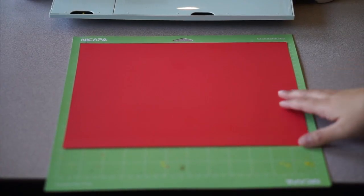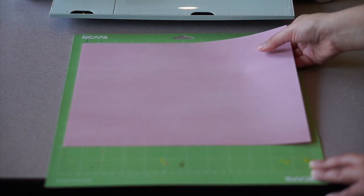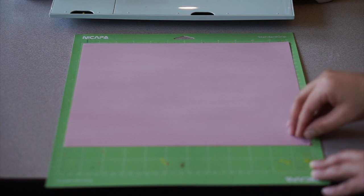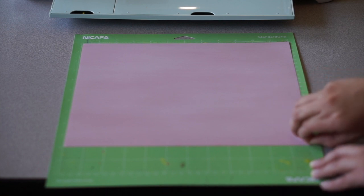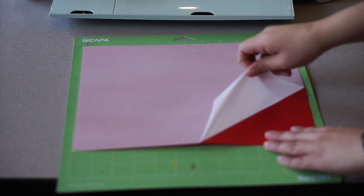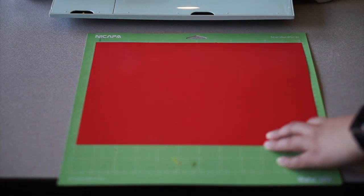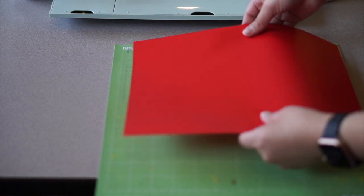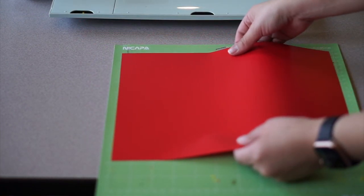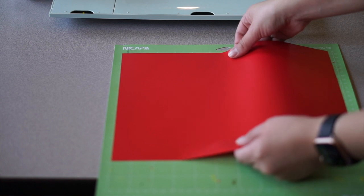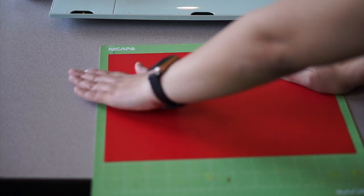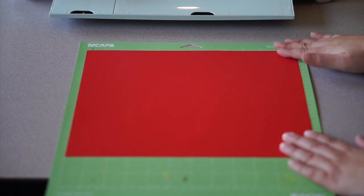Putting the material on the sticky mat is super simple. First, you want to make sure that you remove any film that the iron-on vinyl comes with. Here I'm just peeling it off at the corner and removing it. You also want to refer to the instructions on your product to see what side should be facing up. Lastly, you just want to align it to the grid, place it in, smooth it out, and make sure you don't have any bumps. And you're all set.